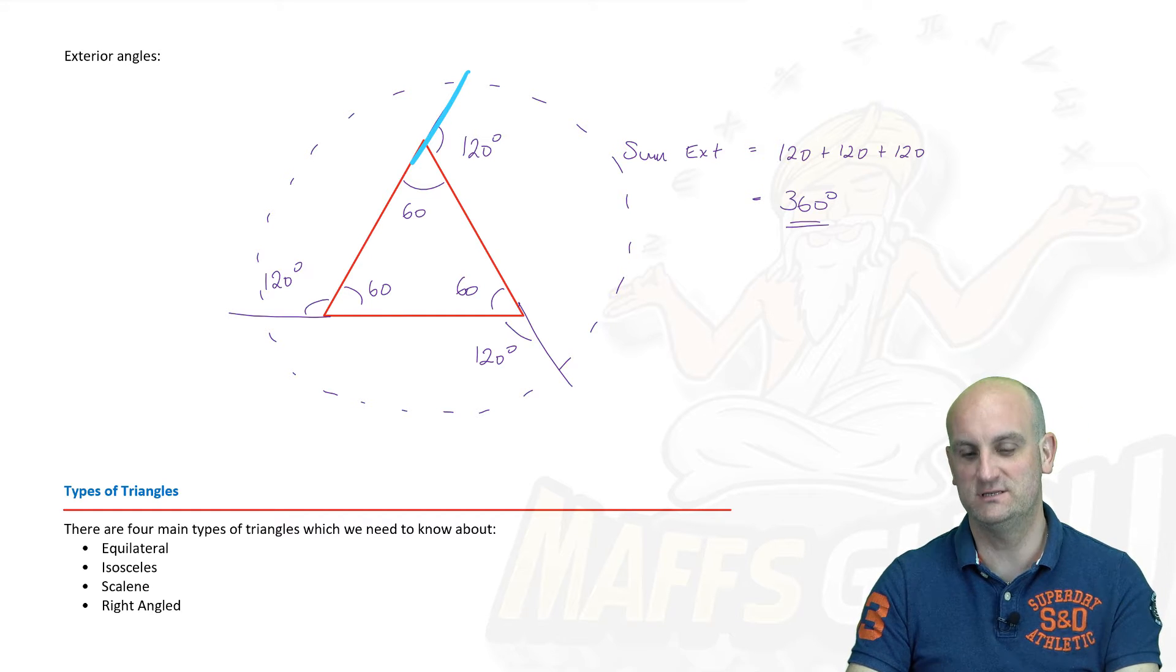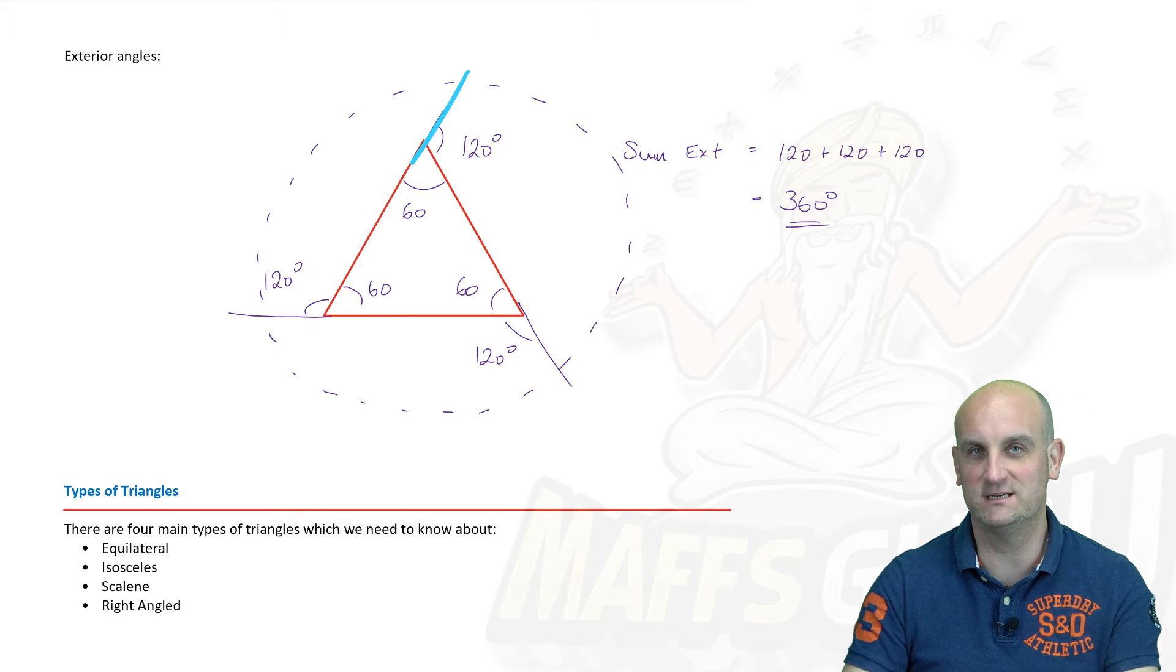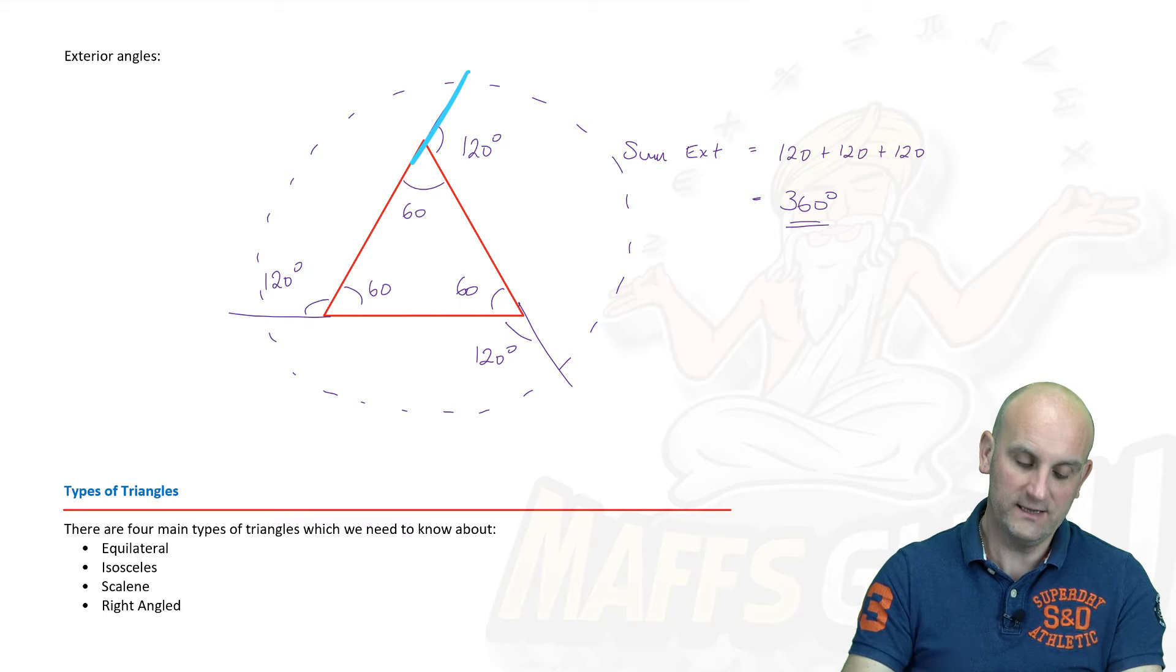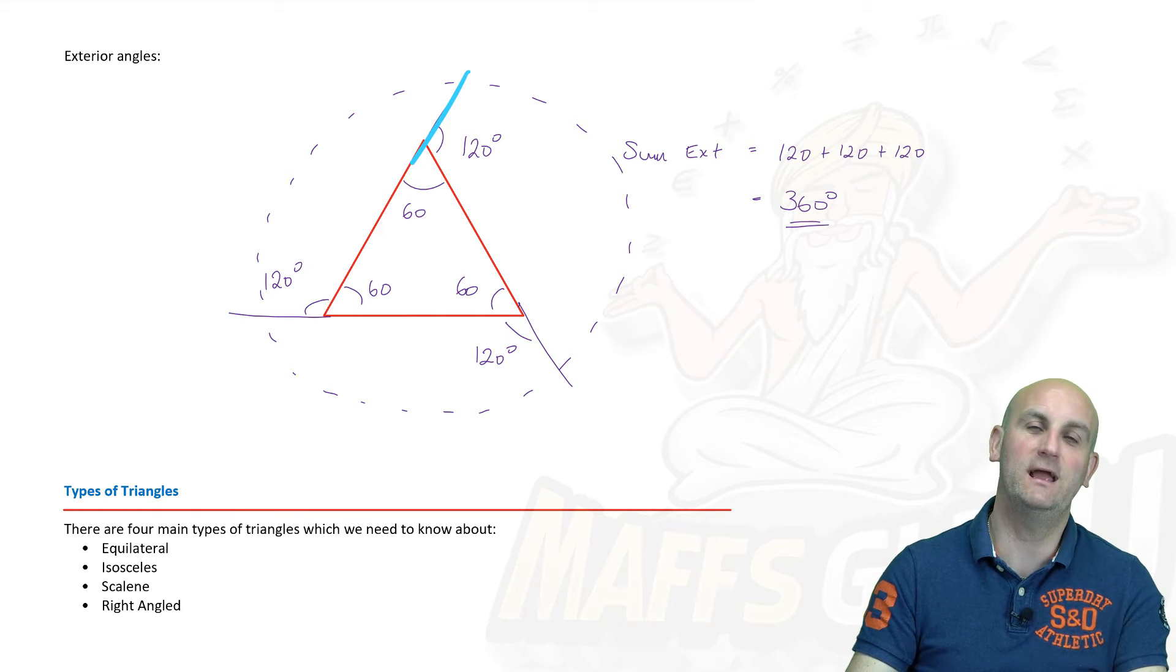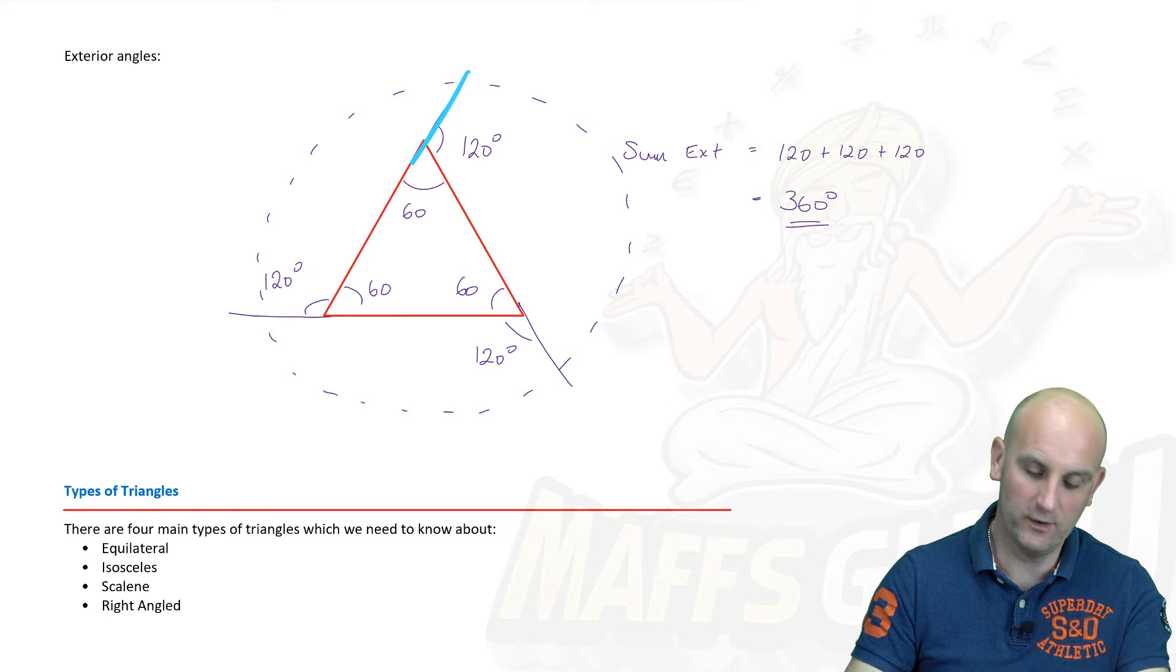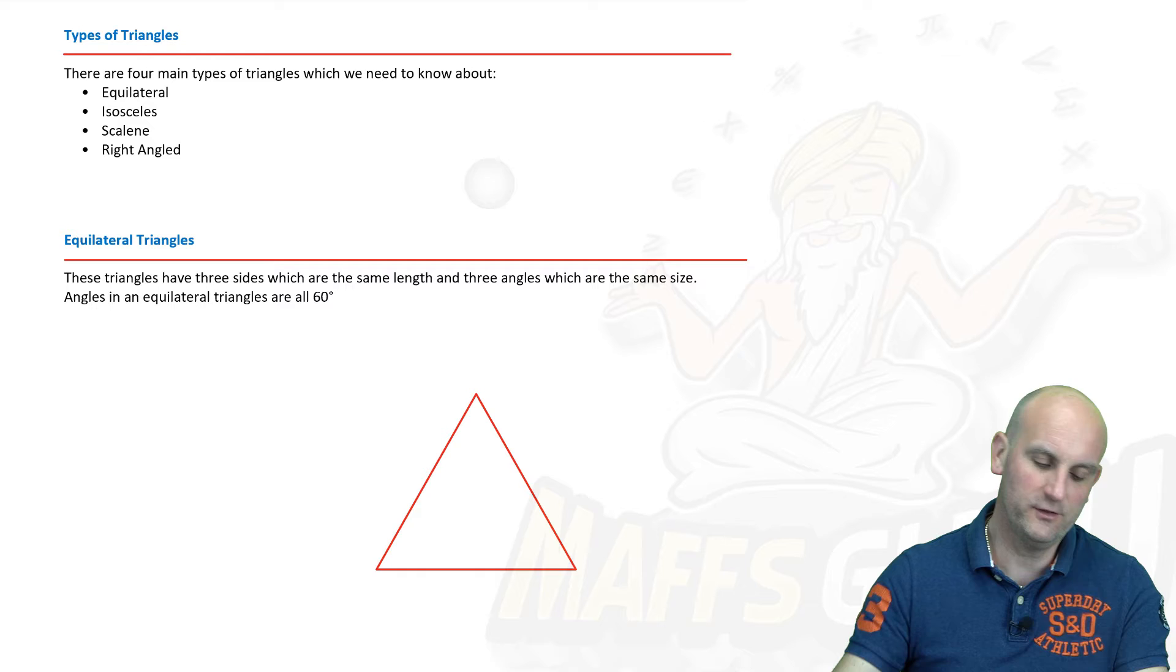That does not mean that the angles inside are 360 as well, okay? This is a triangle, and we know from previous work that the interior angles of a triangle are, in fact, 180 degrees. But it's important to note that exterior angles of a triangle are 360 degrees.